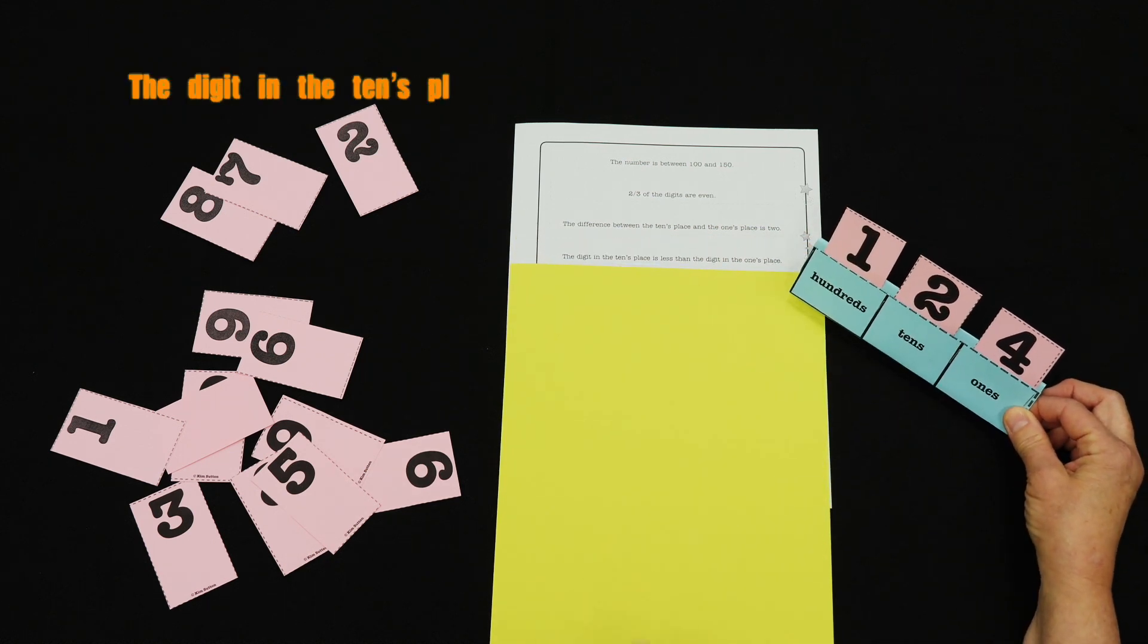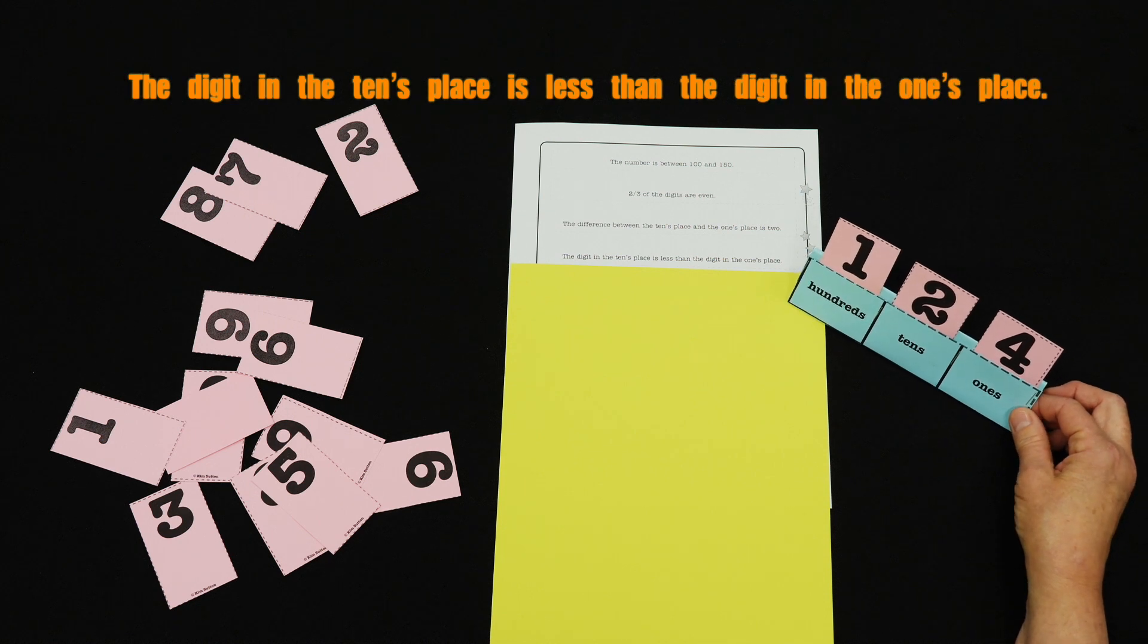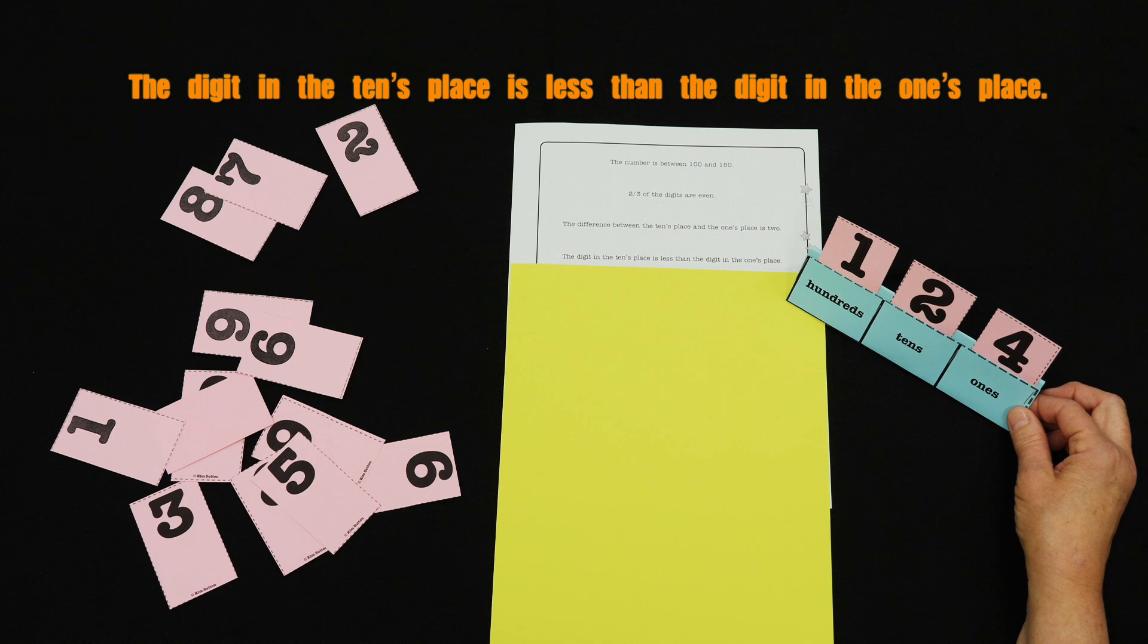Now another clue is revealed: digit in the tens place is less than the digit in the ones place. Well, that I got right.